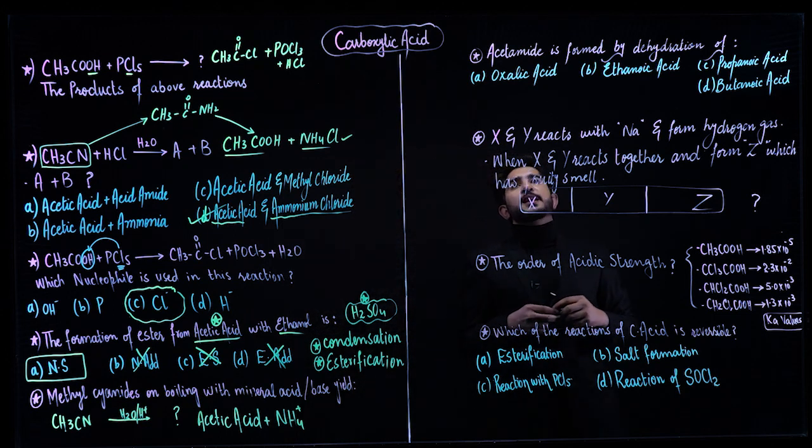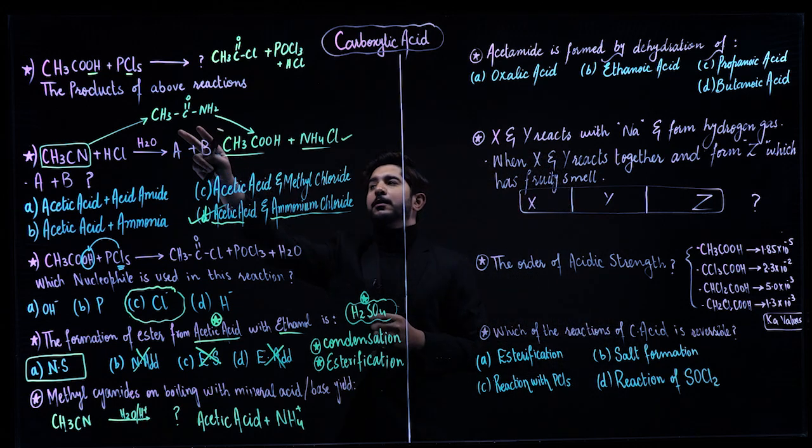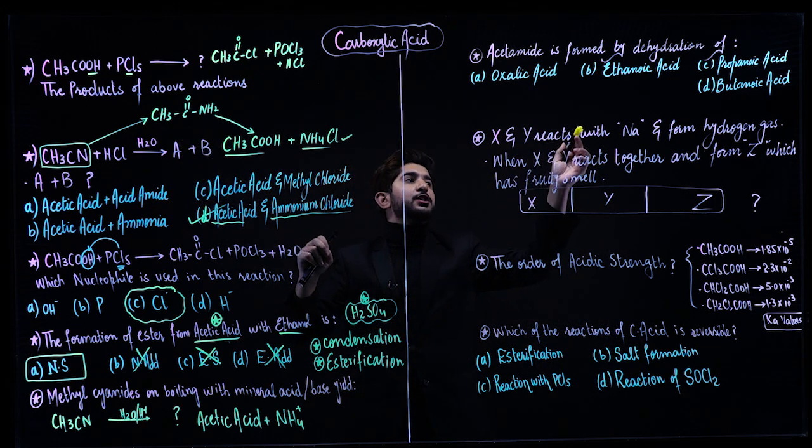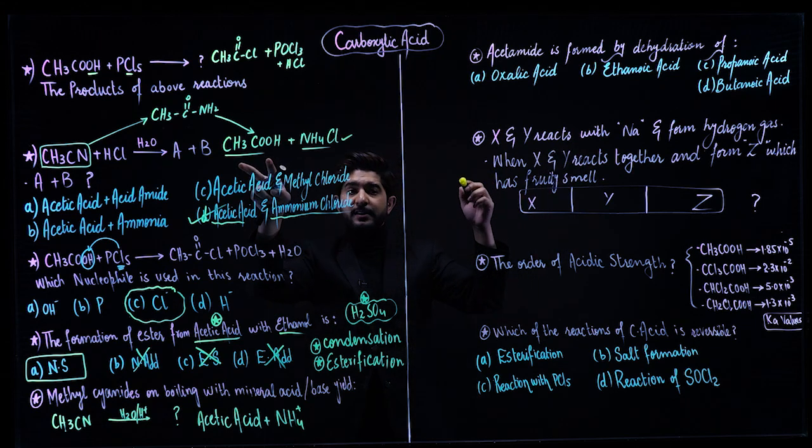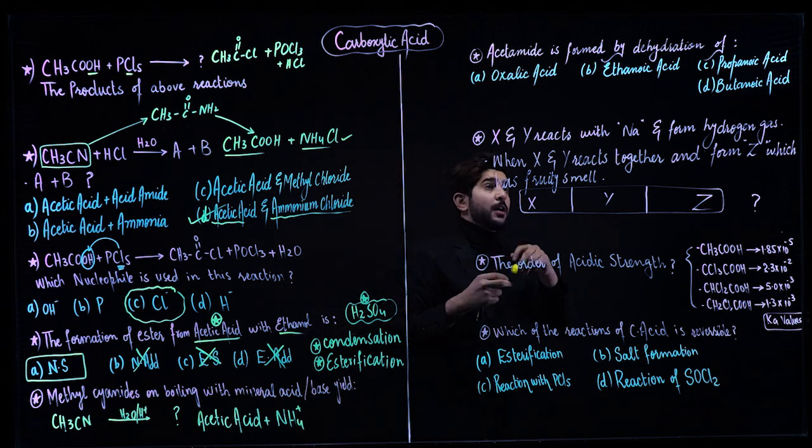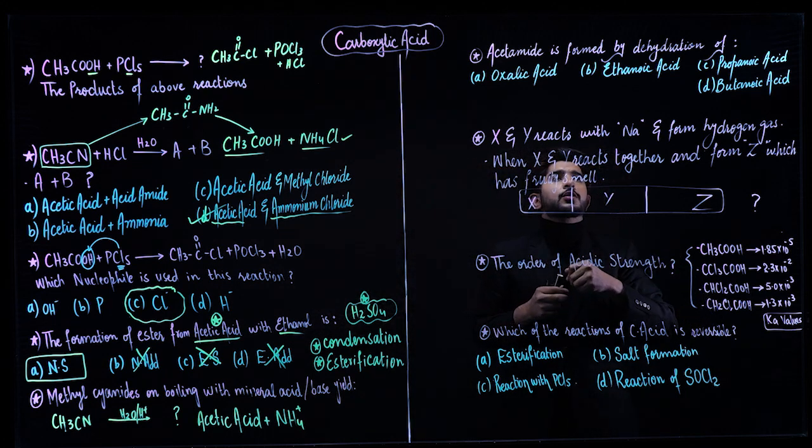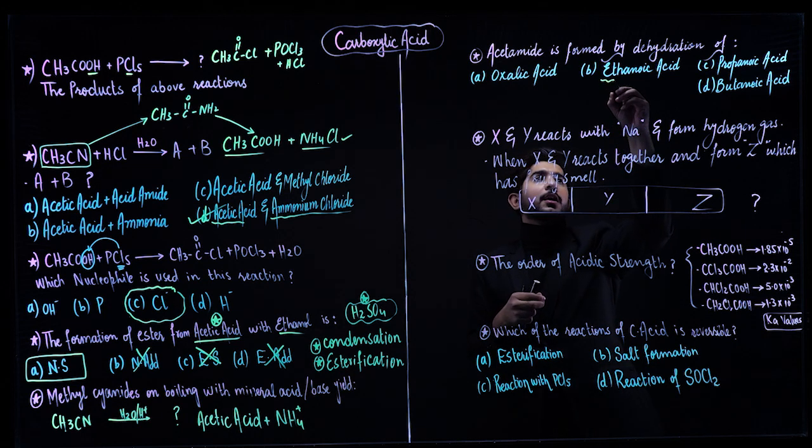Next question: acetamide is formed by the dehydration of which acid? Same number acid is used, same number of carbons. Acetamide consists of two carbons, so we will use ethanoic acid. B is your required answer.